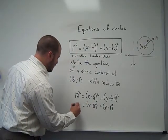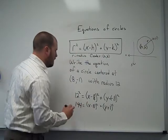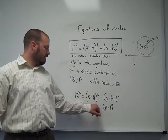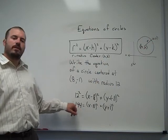And 12 squared, of course, is 144. So this would be an equation for a circle centered at 8 negative 1 with a radius of 12.